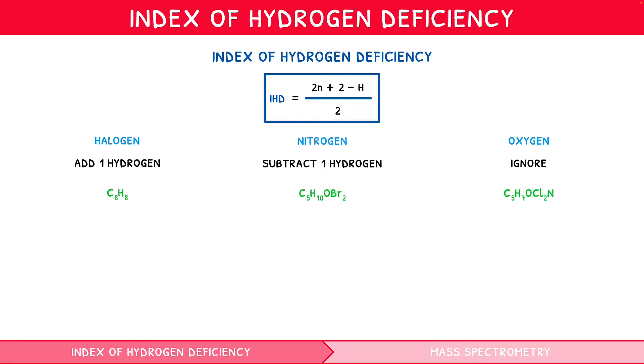Within C8H8, there are 8 carbons and 8 hydrogen atoms. So, substituting our value of N as 8 and H as 8 and simplifying, we get an IHD of 5. This signifies that the molecule has 5 double bonds, 5 rings, or a combination of both totalling to 5. A possible structure would be as follows.